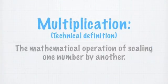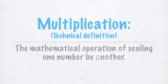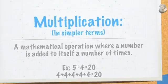The technical definition of multiplication is the mathematical operation of scaling one number by another. In simpler terms, multiplication is a mathematical operation where a number is added to itself a number of times. For example, 5 times 4 equals 20, or 4 plus 4 plus 4 plus 4 plus 4 equals 20.